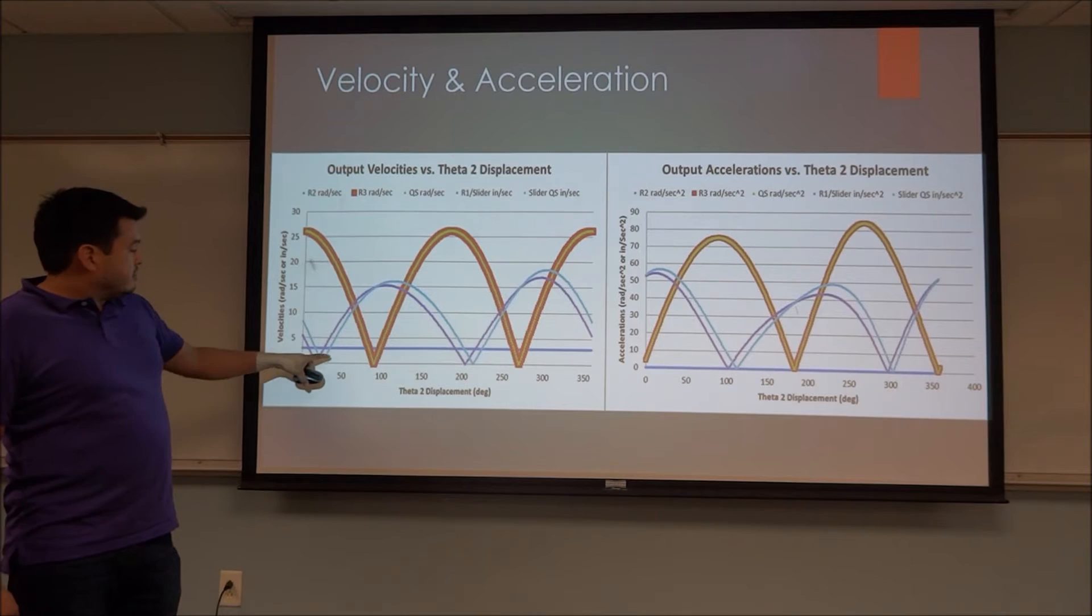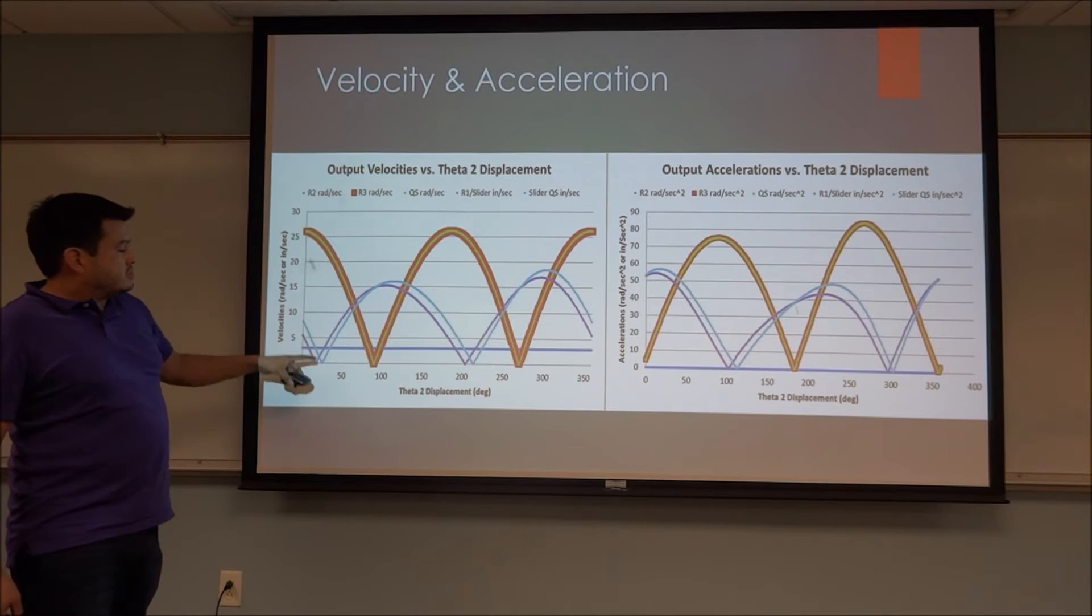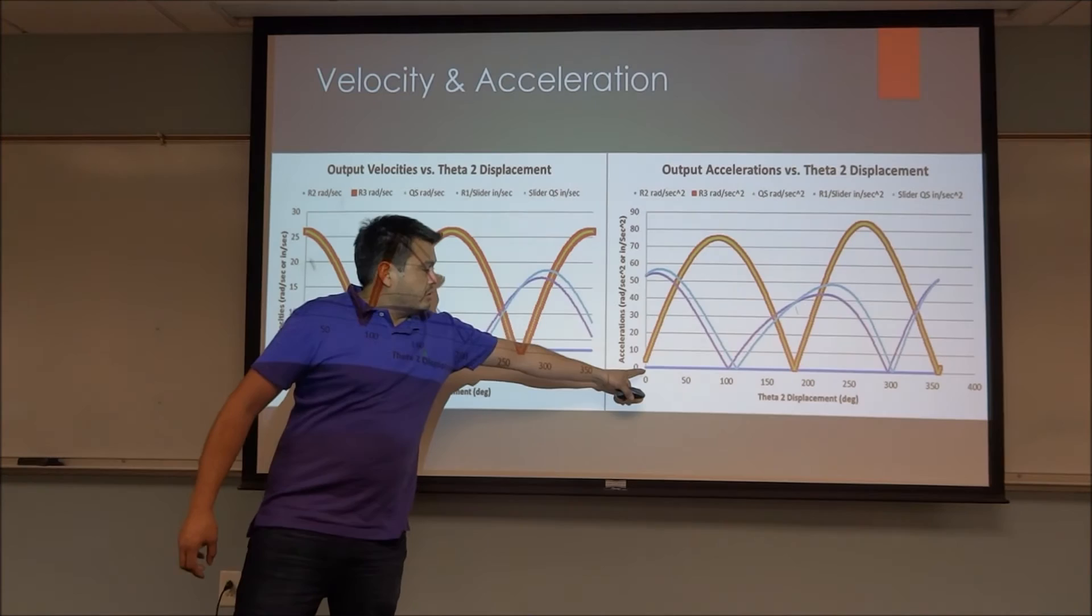And as we can see here, the velocity of this line right here, the velocity of R2 is constant. It's set to 3 radians per second, and acceleration here is 0 for R2.